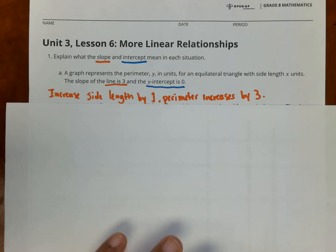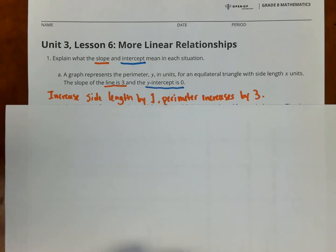Every time you increase the side length, you increase the perimeter by 3 units. That's what the slope means. So every time you increase the side length by 1, the perimeter increases by 3. Remember, the slope is the rate of change. Every time you increase by 1, you're increasing that by something. In this problem, it's by 3.